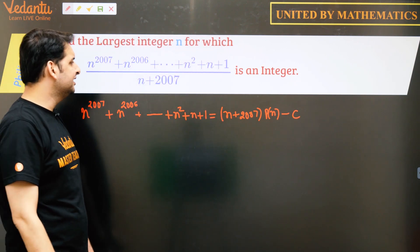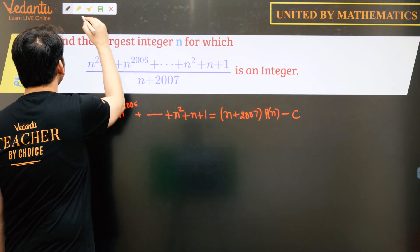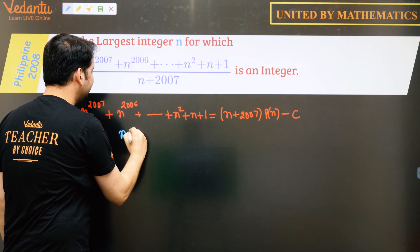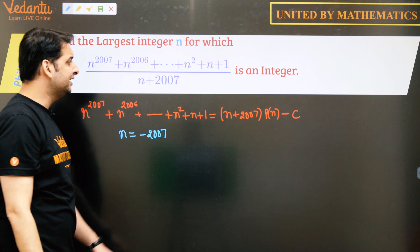Let's say the remainder is minus c and let us try to find c which we can easily do by putting n as 2007 or minus 2007.